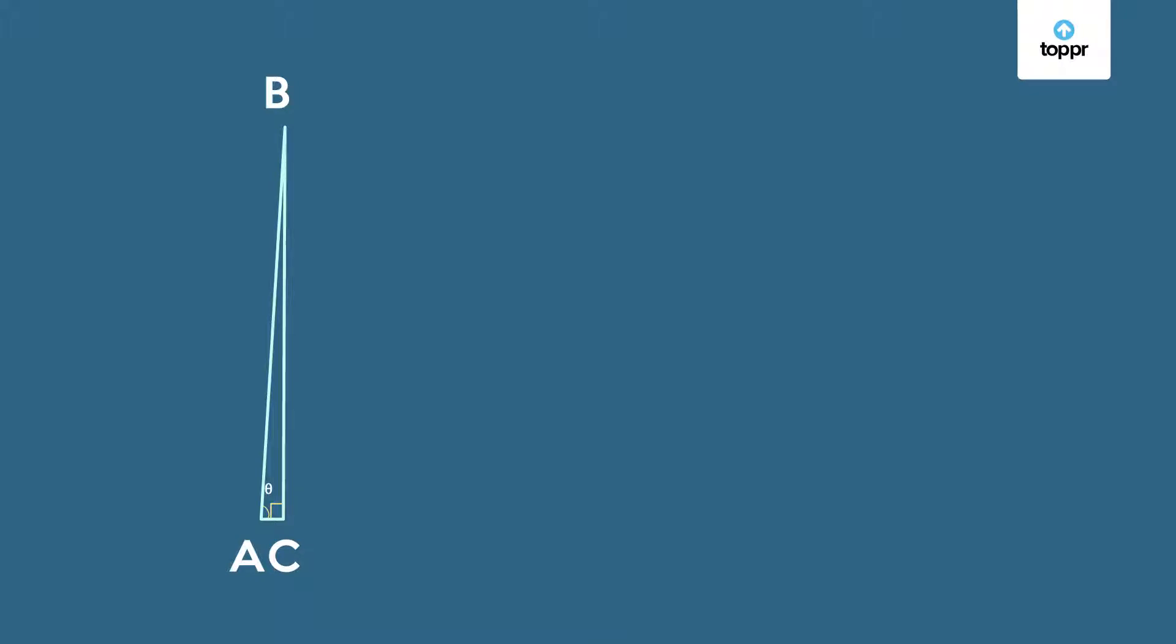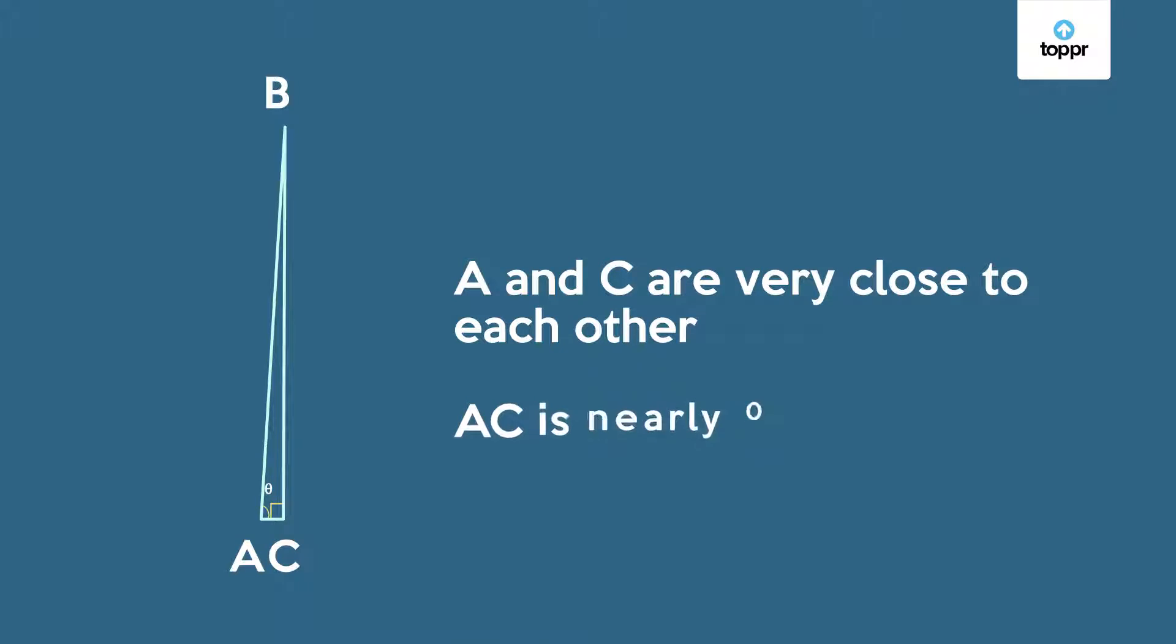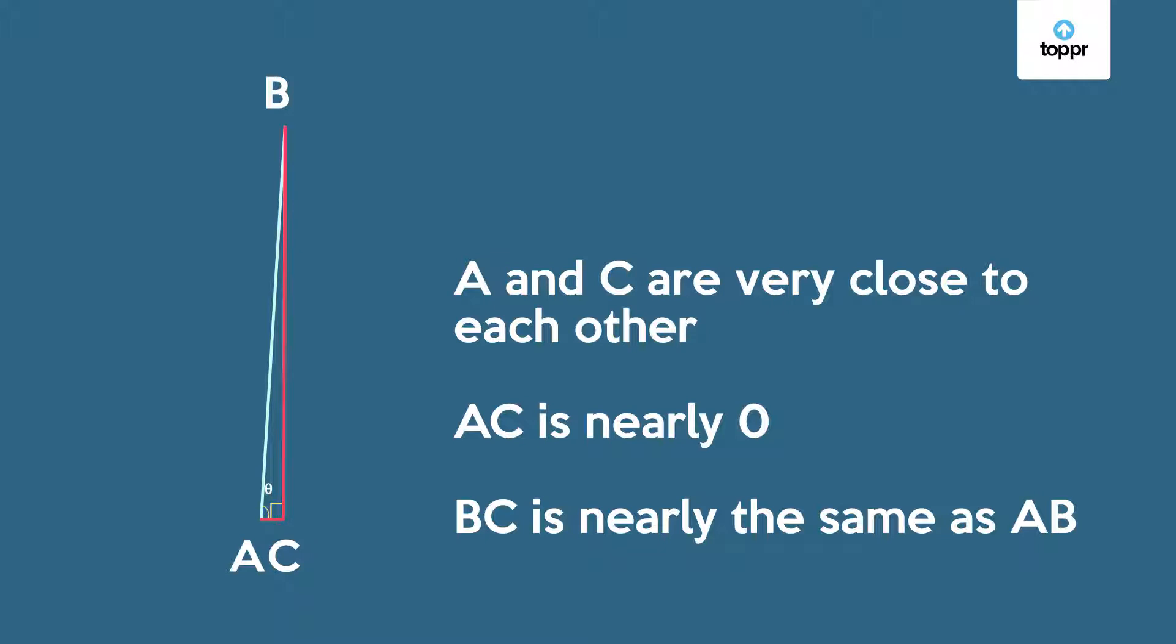The angle C is a right angle as before. But now angle A is nearly a right angle too. The points A and C are very close to each other. So the length of AC is nearly 0 and the length of BC is nearly equal to the hypotenuse AB.